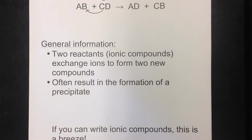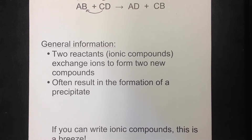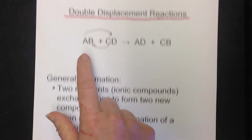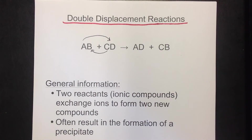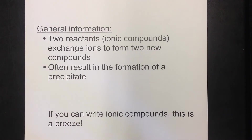We often see the formation of a precipitate in a double displacement reaction. A precipitate is an indication of a chemical change — it's basically a solid that forms when you mix two aqueous solutions of ionic compounds. The AQ notation means they're dissolved in water, and that's what allows the new ions to meet up. As long as you can write ionic compounds, these are a breeze.